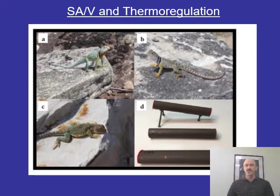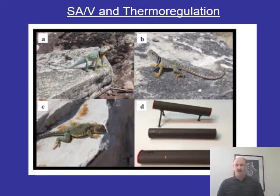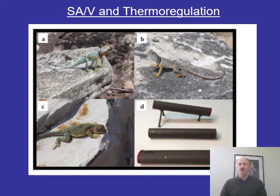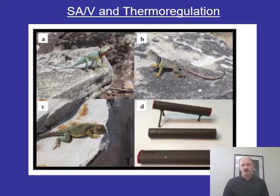We're going to look at this concept in the context of surface area to volume and its relationship to thermoregulation — that is, how organisms, especially ectotherms, maintain an internal body temperature conducive to life. How do they maintain the right body temperatures? How do they cool off, warm up, and take advantage of surface area to volume?